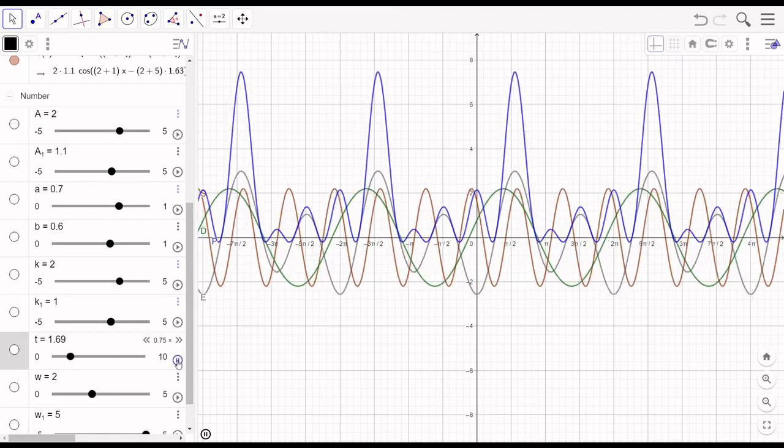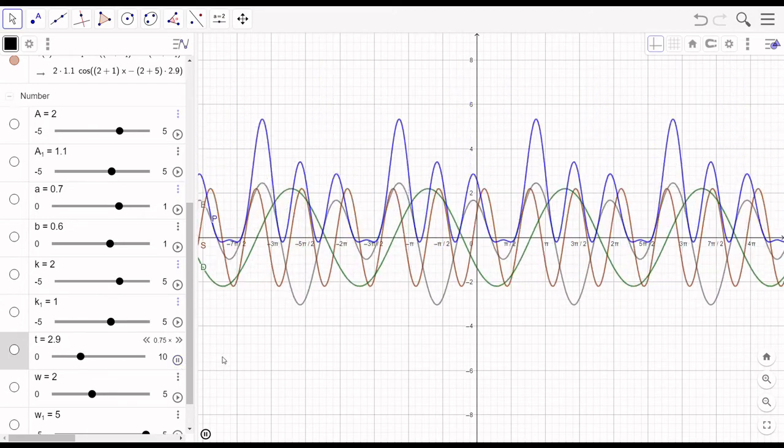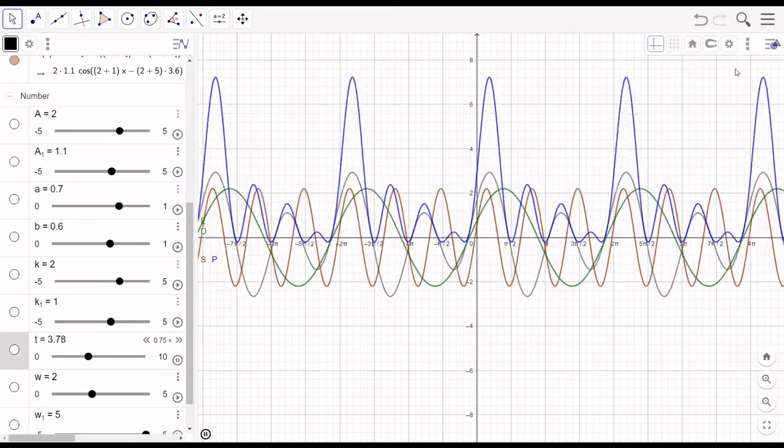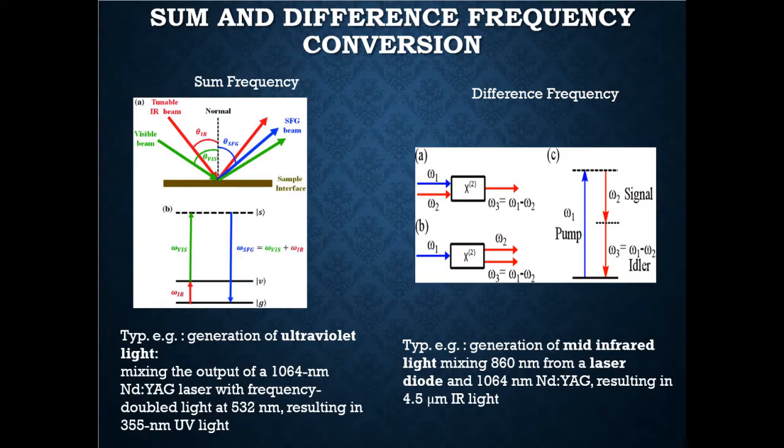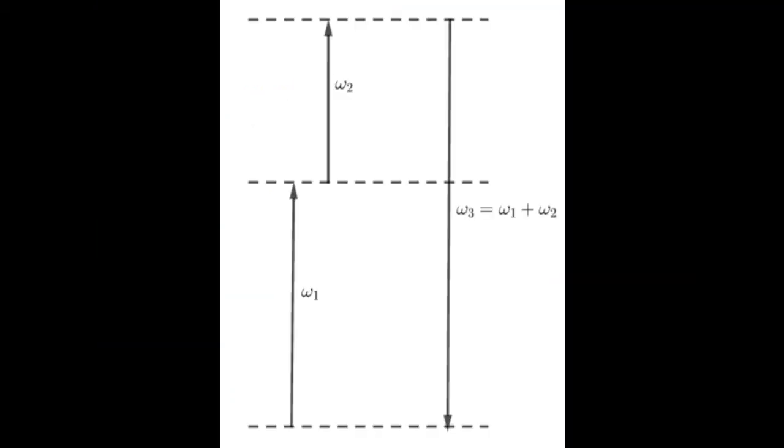We can also try to understand the sum and difference frequency modes in terms of quantum mechanics. For sum frequency we can imagine two modes or two photons being absorbed by the material going to a higher energy and de-exciting giving an output photon whose energy is the sum of the input two photons. This is a spontaneous emission.